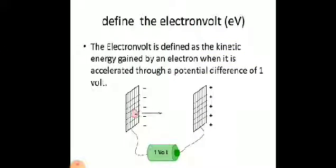The electron volt is defined as the kinetic energy gained by an electron when it is accelerated through a potential difference of 1 volt. That is, if an electron is to be moved from the negatively charged plate to the positively charged plate, and if the potential difference between the plates is 1 volt, the kinetic energy gained by the electron is termed as electron volt.